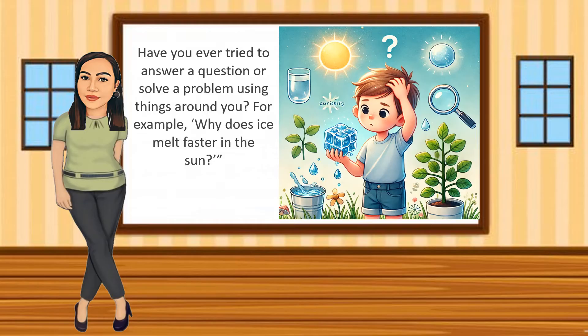Have you ever tried to answer a question or solve a problem using things around you? For example, why does ice melt faster in the sun? These are the kinds of questions that make us curious about how things work. Well, scientists use something called a Science Investigatory Project, or SIP for short, to help them find answers to these types of questions. Just like how you wonder about these things, a SIP is a tool you can use to explore, experiment, and figure out the why behind everyday problems.